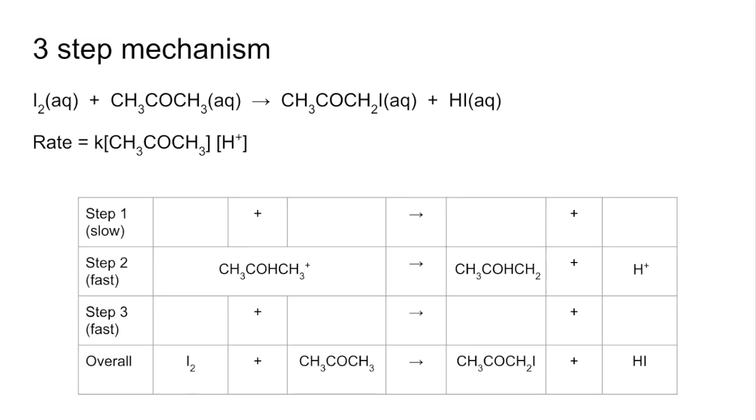The next one we're going to look at is slightly more complicated. It's a three-step mechanism, but we've been given the second step. We've got the rate equation: rate equals K, concentration of propanone multiplied by the concentration of the H plus ion, first order for both. We just need those in the reactants for step one.